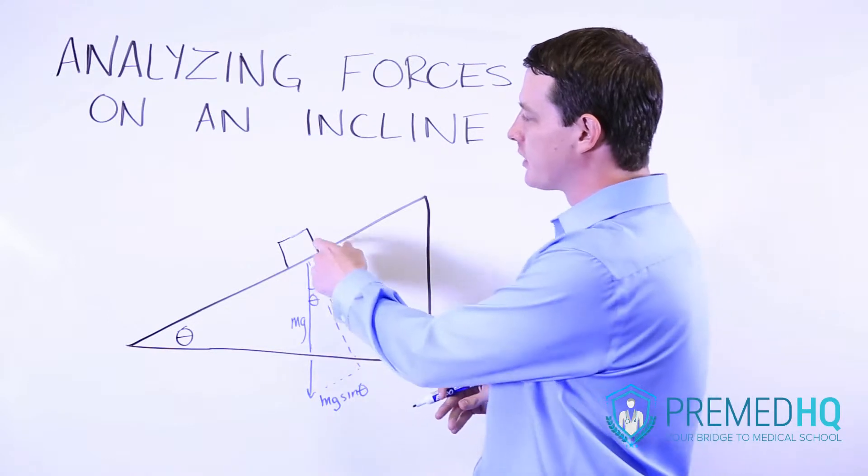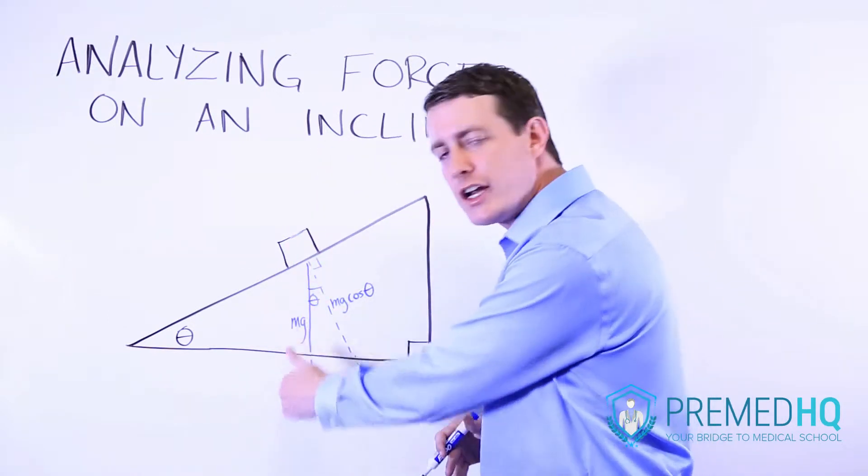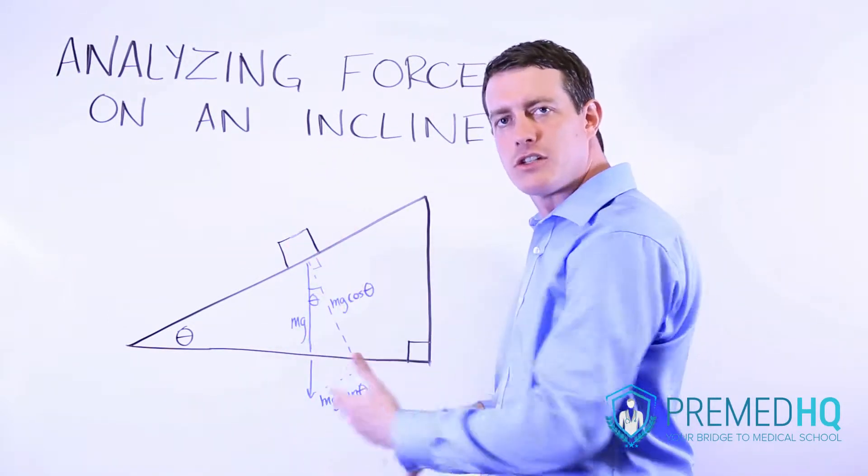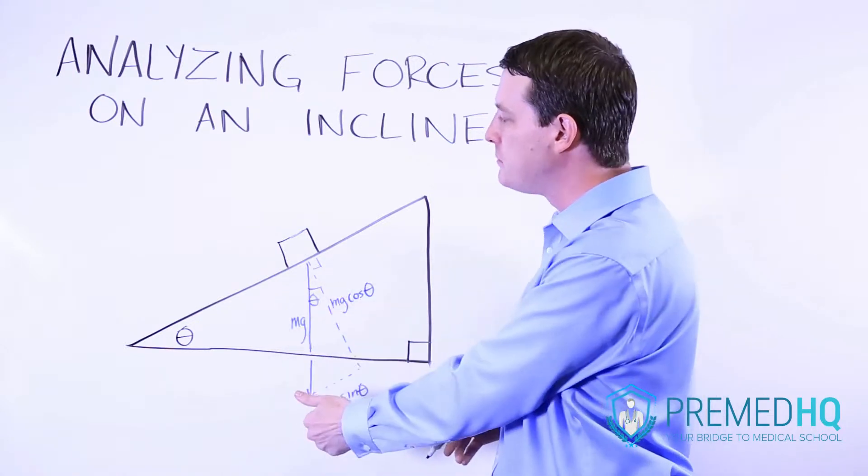What we're going to do here is start with this object and draw straight down our gravitational force vector. So it's just going to be mg there.